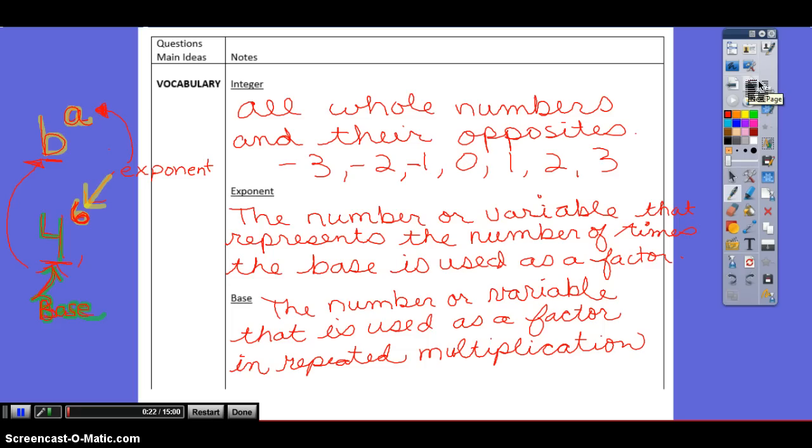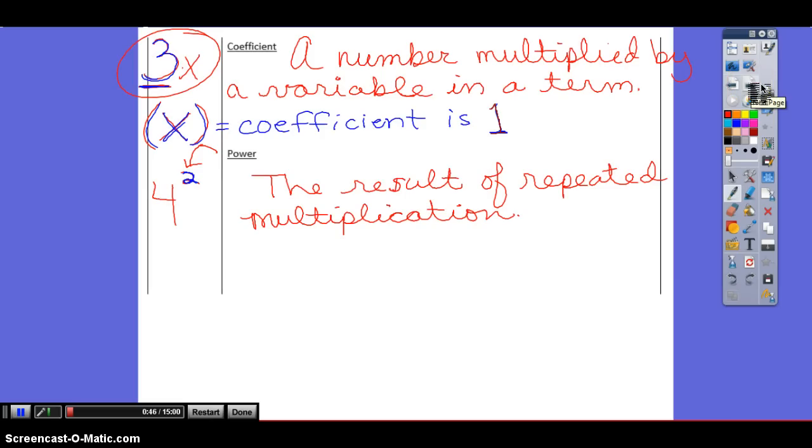We talked about the exponent. Right here, examples. 6, that's the number or variable that represents the number of times that the base is used. We talked about the base here. The 4 would be the base, 6 is the exponent. What else do we know 6 to be? Yesterday we learned 6 to be our power. Exactly. We talked about a coefficient. Coefficient is the number with the variable.